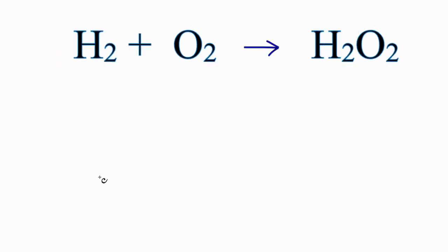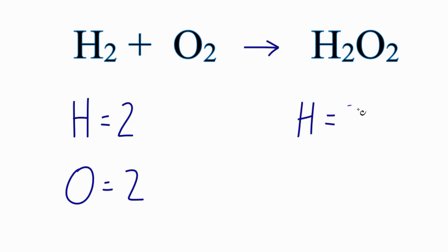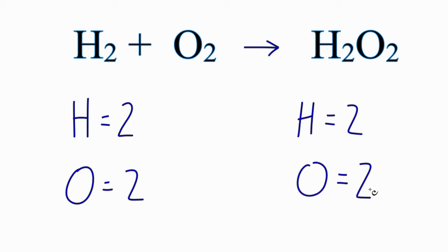The first thing we need to do in balancing chemical equations is to do the accounting — to add up the atoms on each side of the reaction. So we'll start here: hydrogen, we have two of those; oxygen, we also have two. We go to the product side: we have hydrogen, two, and then oxygen, we have two as well. So it turns out that this equation is already balanced.